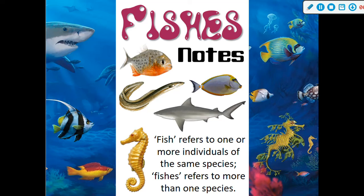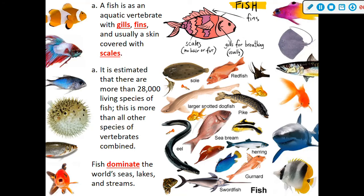I would like to note that 'fish' refers to one or more individuals of the same species. 'Fishes' is the proper term referring to more than one species. A fish is an aquatic vertebrate with gills, fins, and usually skin covered with scales. Sharks do not have scales but are considered fish — they are cartilaginous fish. It is estimated there are more than 28,000 living species of fish, more than all other vertebrate species combined, and we are constantly finding new species.